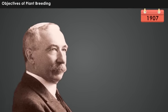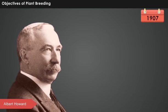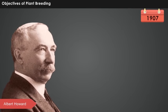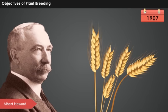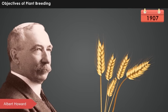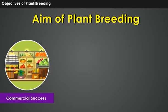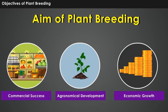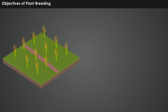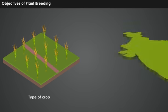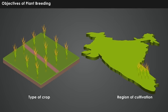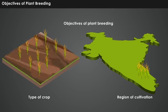In 1907, Albert Howard, a British scientist, conducted the first experiment on wheat plants applying various plant breeding techniques. The preliminary aim of plant breeding is to improve crop varieties that are commercially, agronomically and economically successful. However, based on the type of crop and the region of cultivation, specific objectives of plant breeding may vary. Let us discuss some of the main objectives of plant breeding.